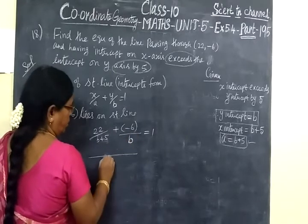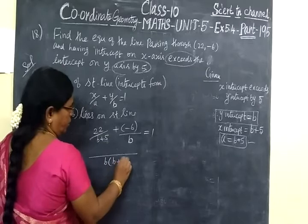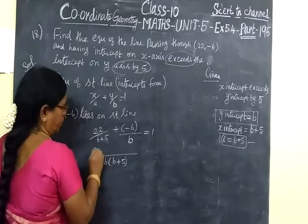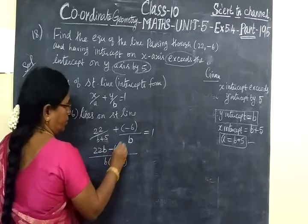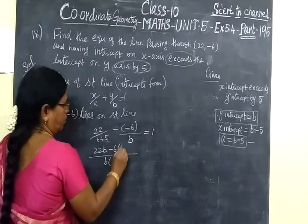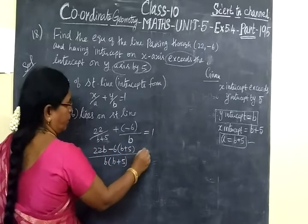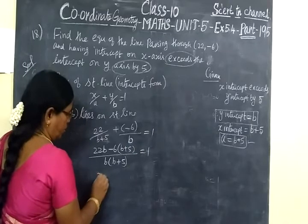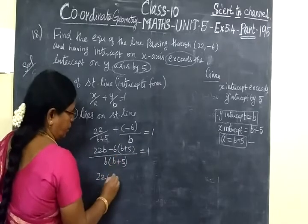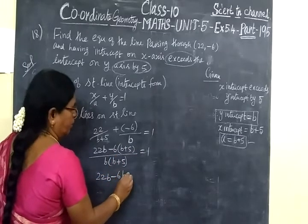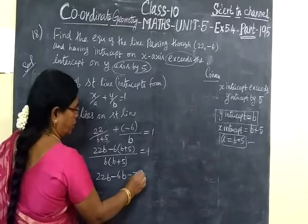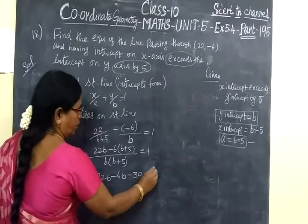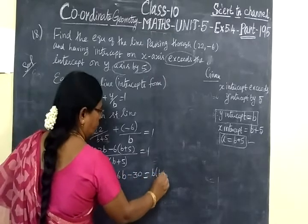Now take LCM as B(B+5). Cross multiply: 22B minus 6(B+5) equals B(B+5). This gives us 22B minus 6B minus 30 equals B(B+5).